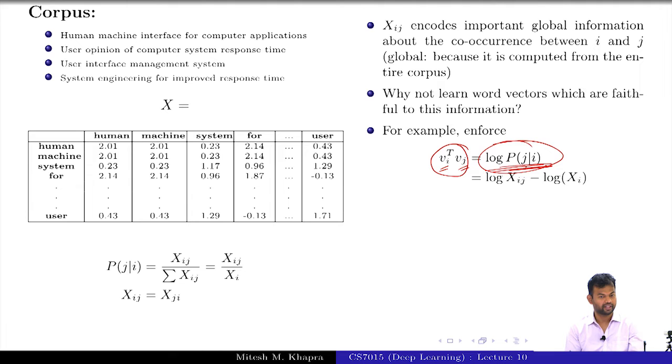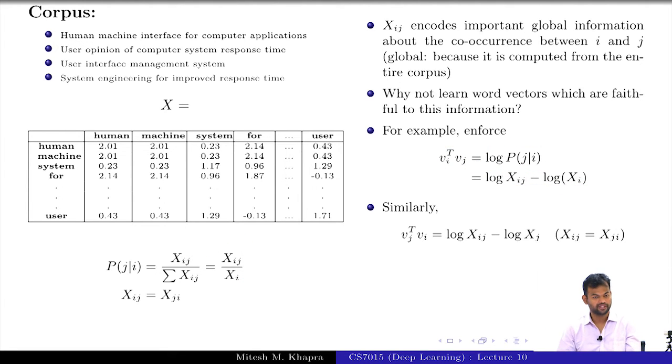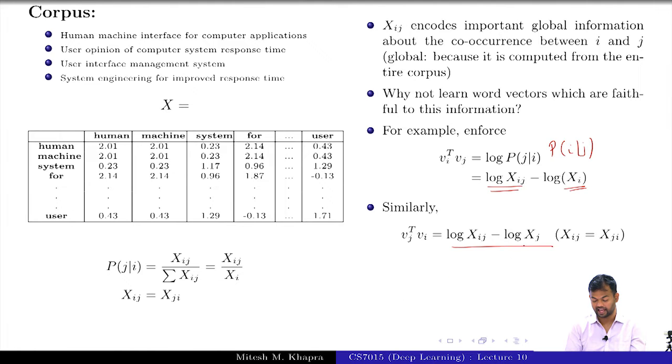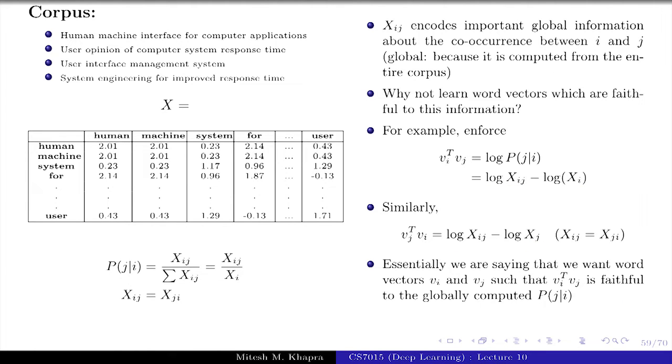Now, what is P of J given I? It is actually this. So I can write it as this. And similarly, I can write the other guy V_J transpose V_I, and that is going to be different because that is going to have P_I given J instead of P_J given I. So I will have log X_IJ is fine, but instead of X_I I will have X_J here. How many of you get this? Fine.